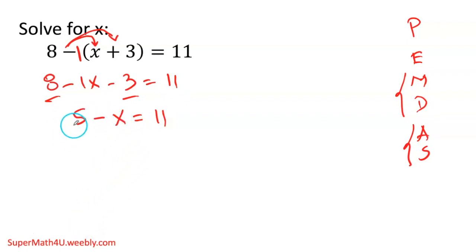Leave the x by itself. Get rid of that 5. This 5 is positive. I do the opposite operation, which is negative. I'm subtracting on both sides. Whatever you do on one side, you're doing the other side of the equation. 5 minus 5 gives you 0. I'll just bring down the negative x. Here, 11 minus 5 is going to give me 6.